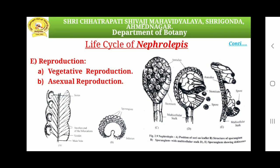The structure of sporangium: The sporangia are sexually reproductive structures. Each sporangium consists of a basal stalk and a distal capsule. The stalk is multicellular, long, slender, and made up of two to three vertical thick-walled rows of cells. The capsule is oval, convex, and disc-like in structure. The wall of the capsule is made up of a single layer of flat thin-walled cells.